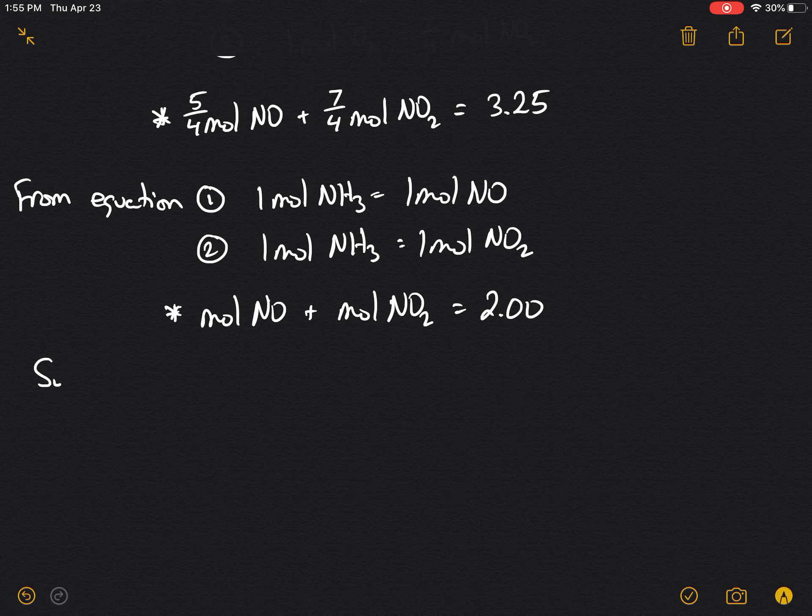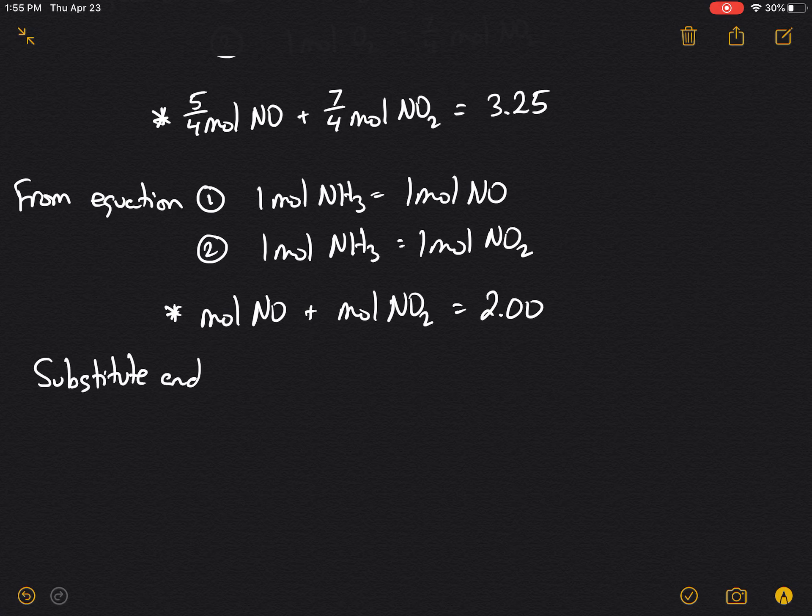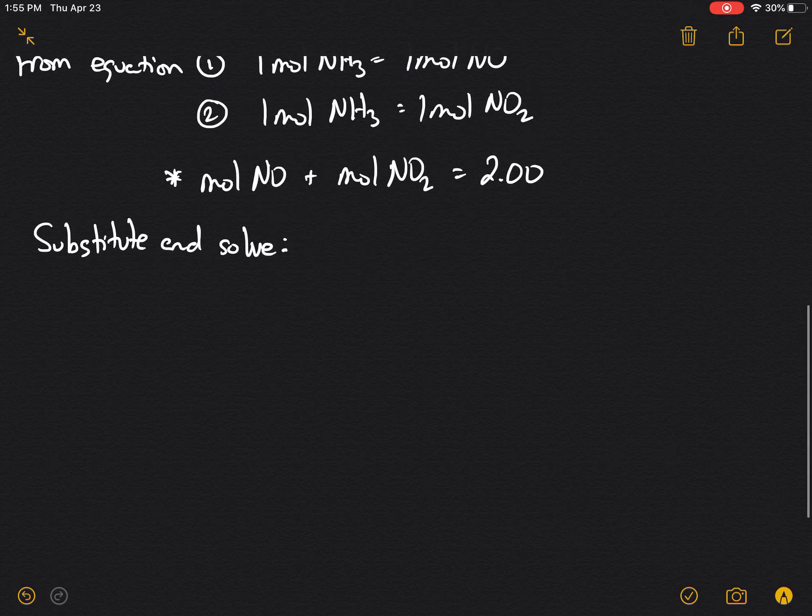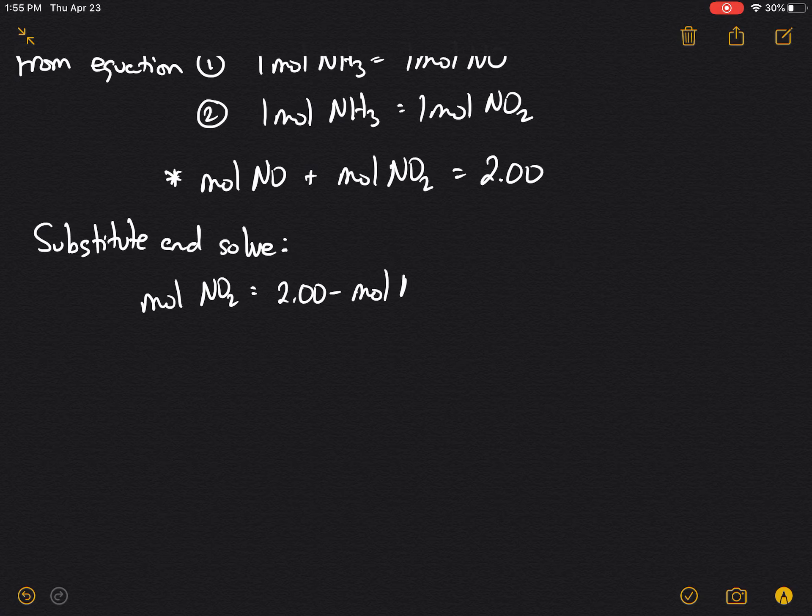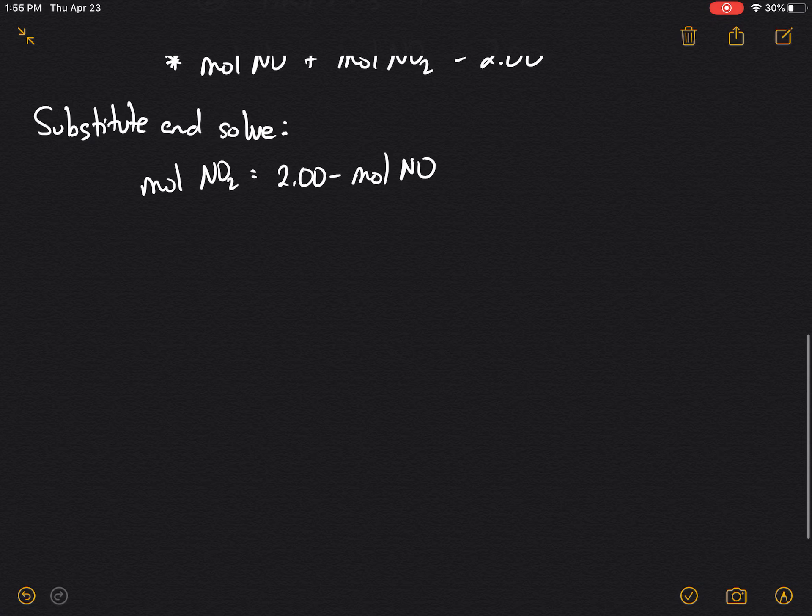So we're going to substitute and solve both of these equations. So substitute and solve the system of two equations. We'll start with the mole of NO2 is equal to 2.00 minus the mole of NO, and we'll substitute this into the first equation that we created.